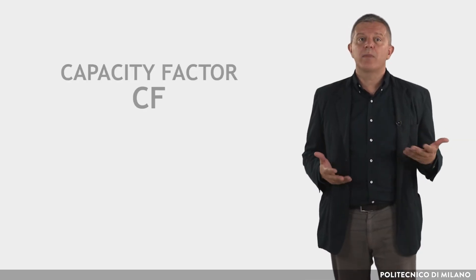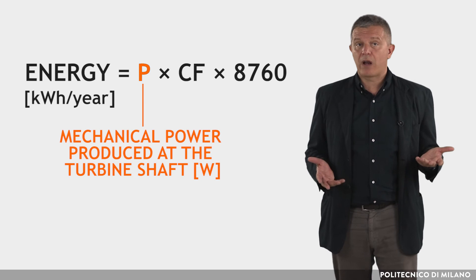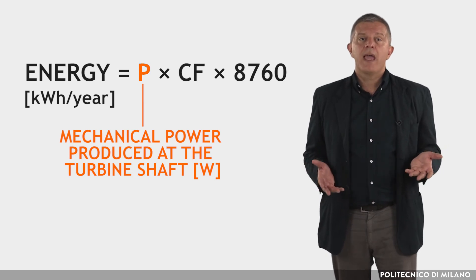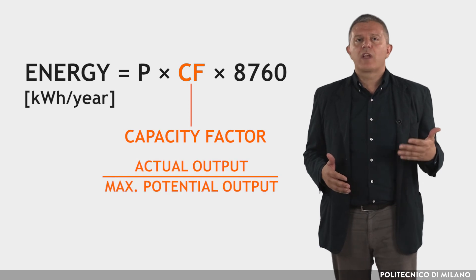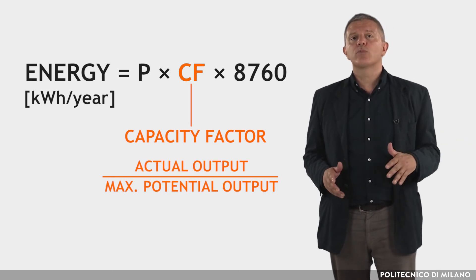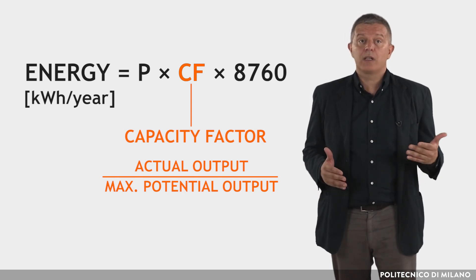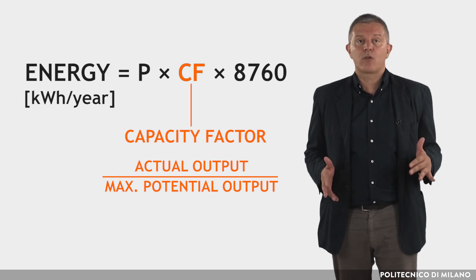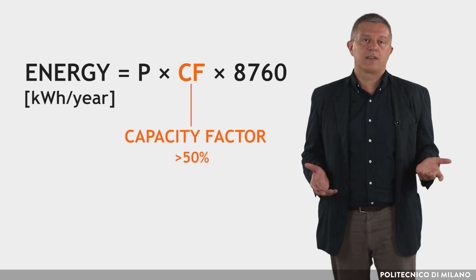The annual energy output of a hydropower plant can be estimated using the capacity factor CF, where P is the power output as defined before and CF is the capacity factor. The capacity factor is the ratio of the actual output over a period of time to the maximum potential output in the same period, and depends on boundary conditions such as water availability, maintenance needs, and equipment failures. Typically it is higher than 50%.